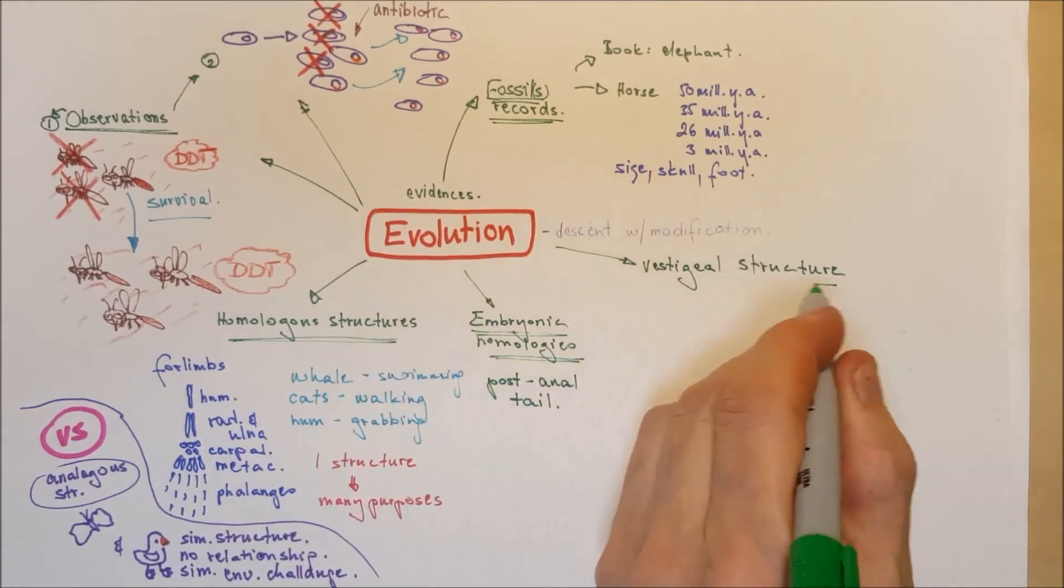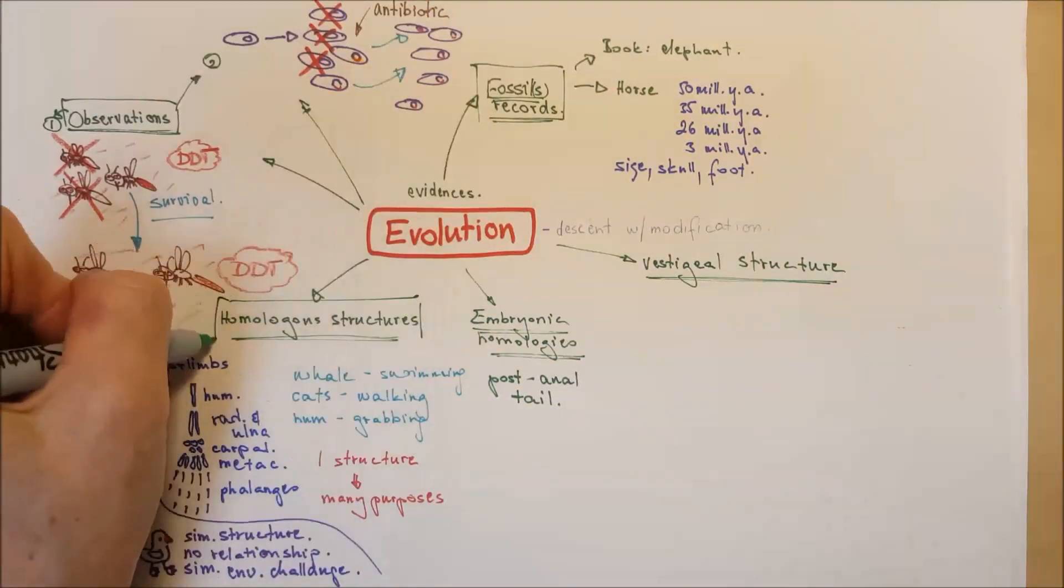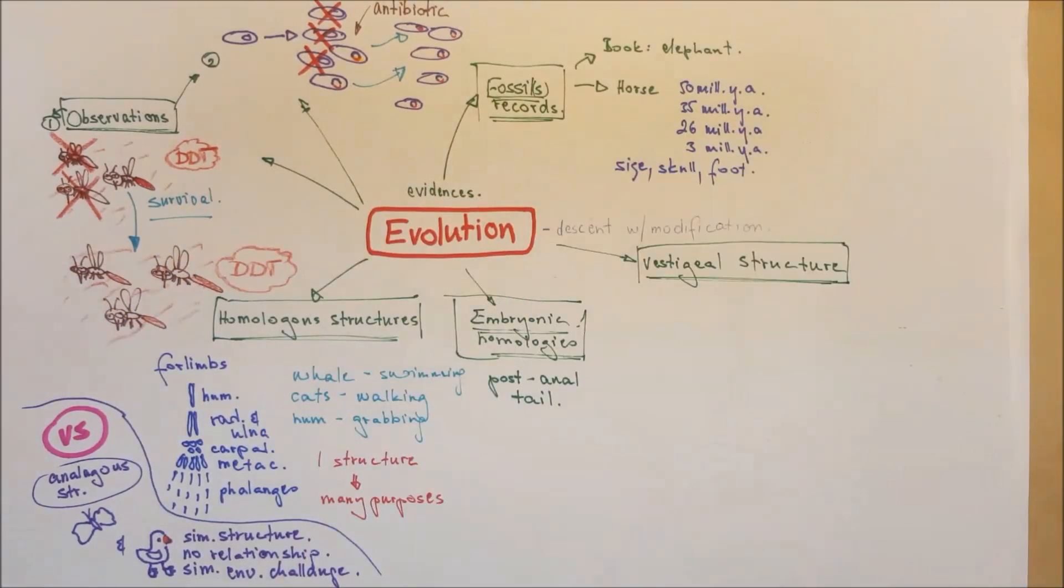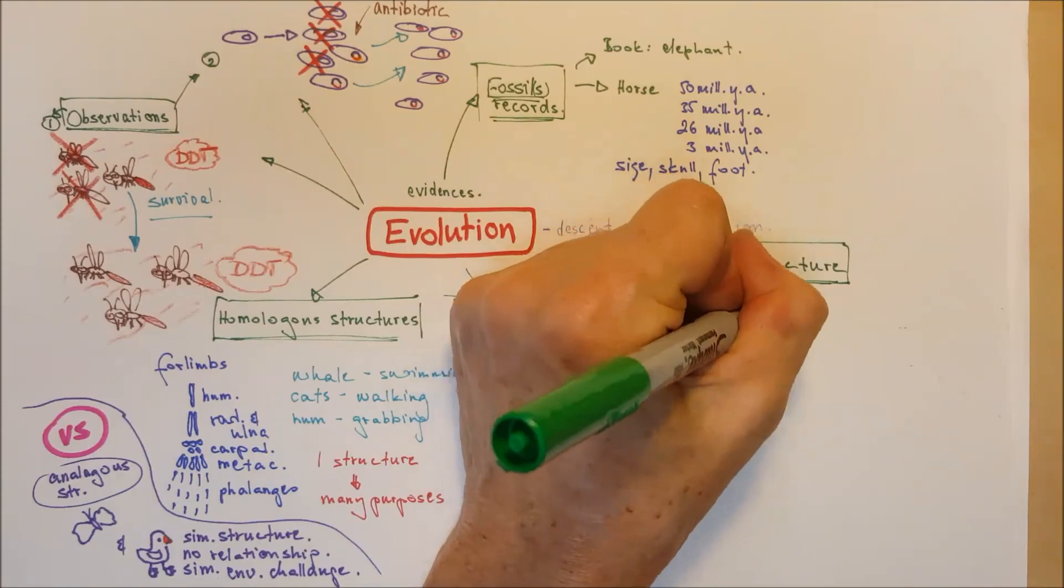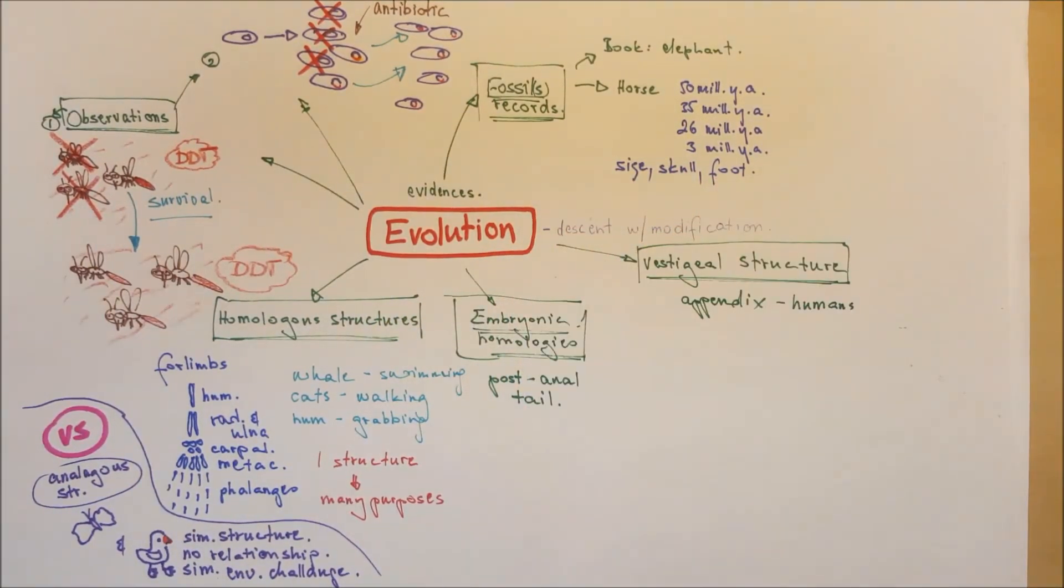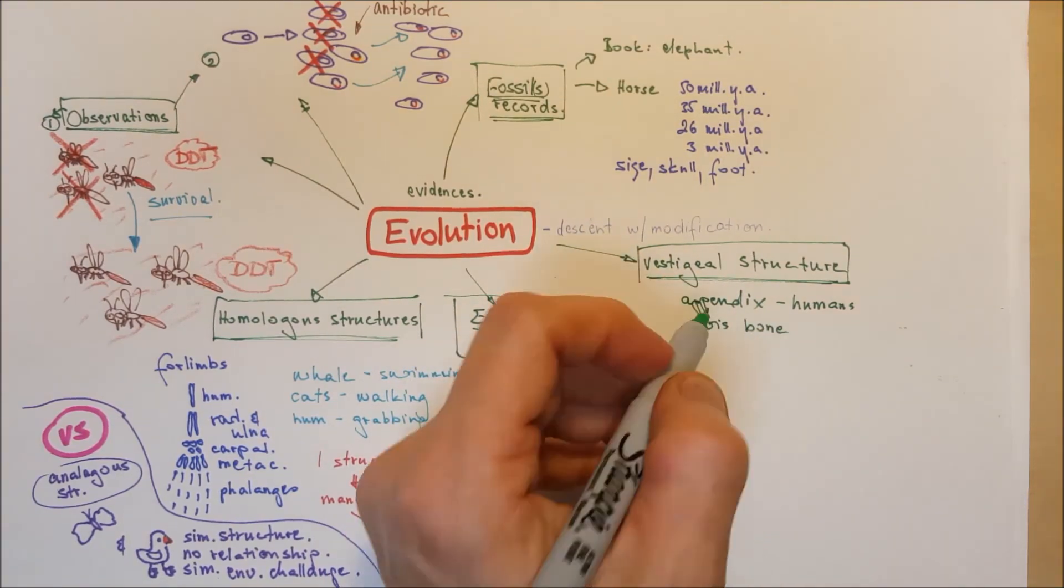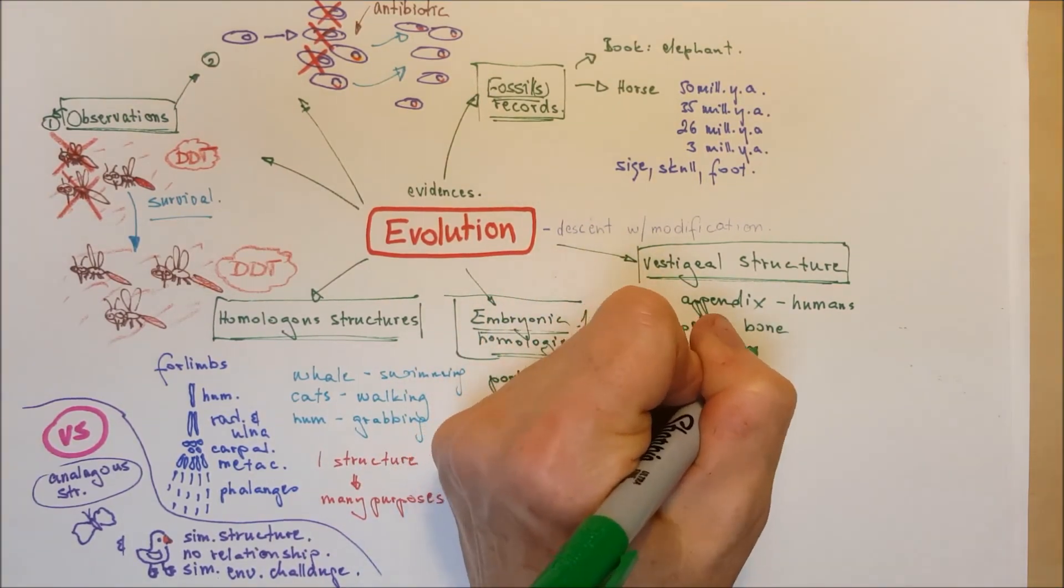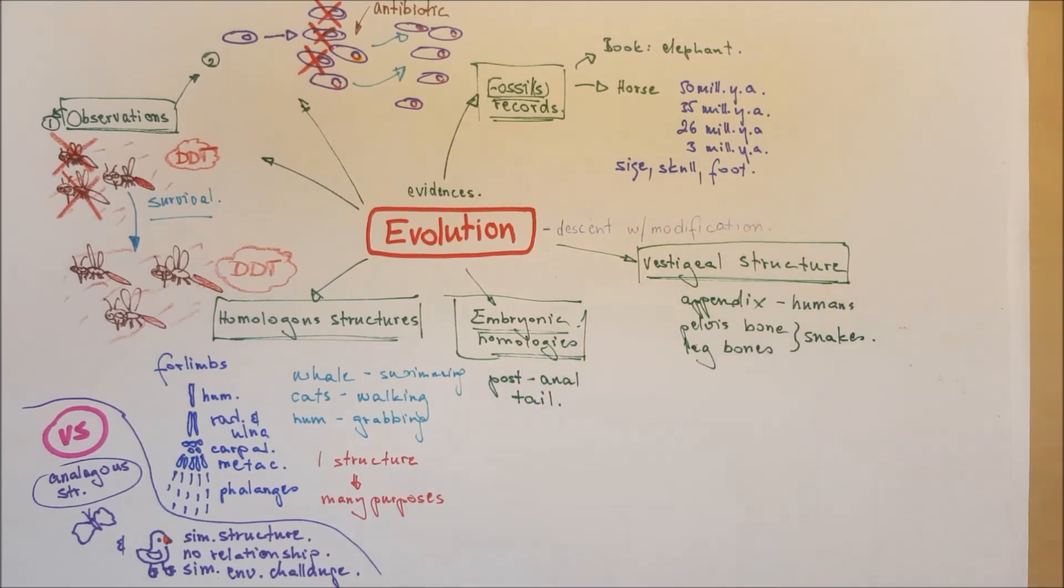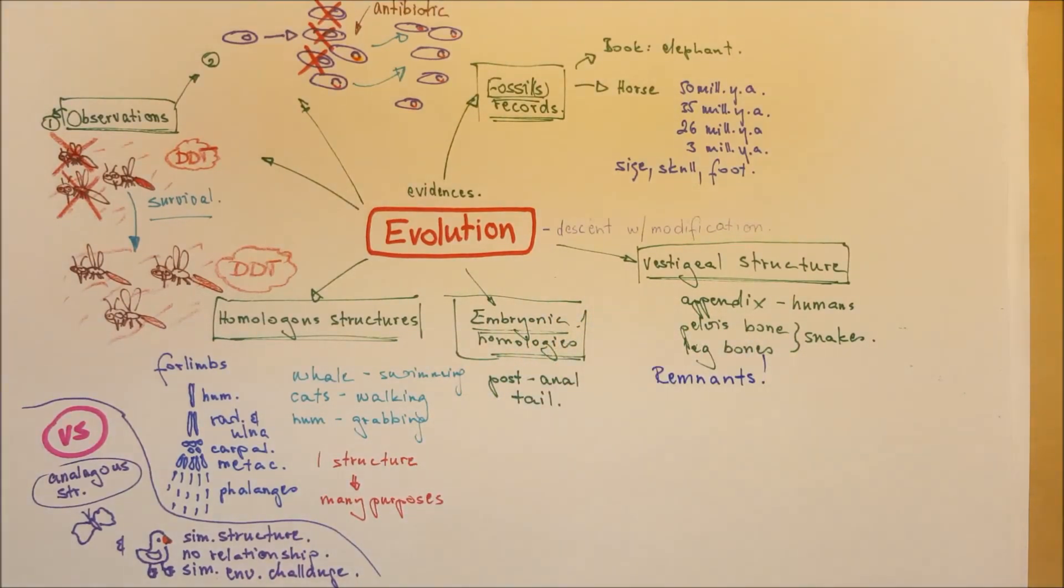The next one is vestigial structures. Vestigial structures, as well as vestigial organs, they are remnants of structures that served important function in the common ancestors. For example, the appendix for humans. For plant eaters it was really important. Or the pelvic bone and the legs for snakes. That tells us that the snakes common ancestors had legs.